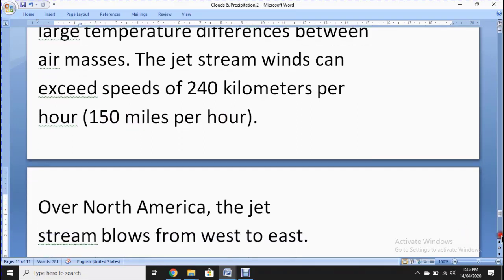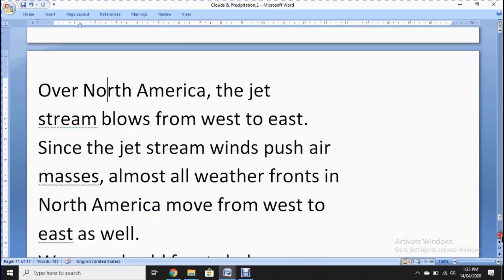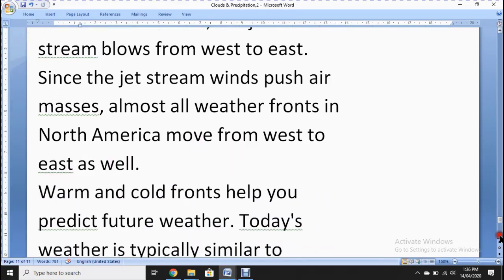Over North America, the jet stream blows from west to east. Since the jet stream winds push air masses, almost all weather fronts in North America move from west to east as well.